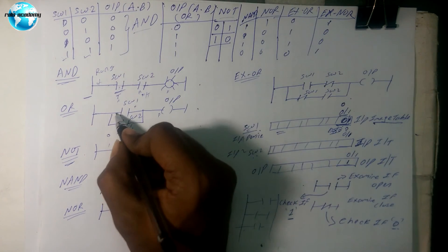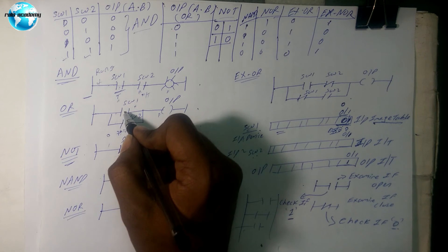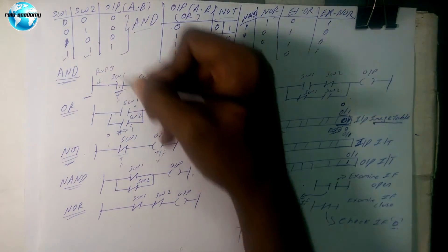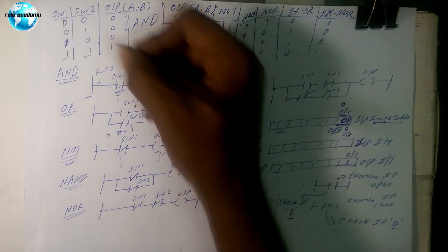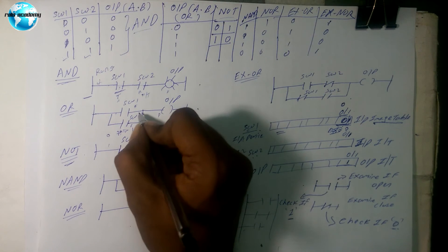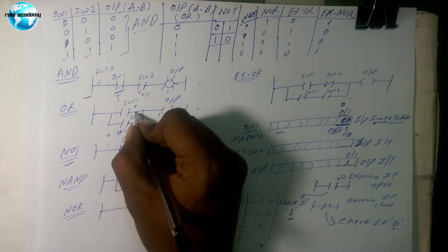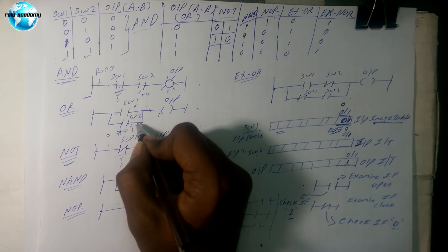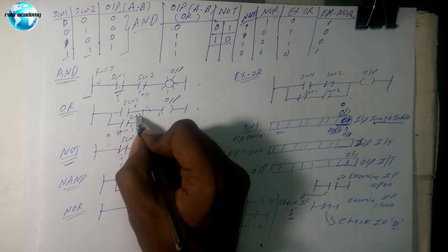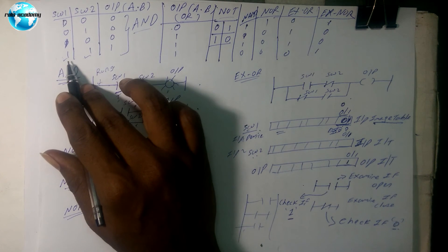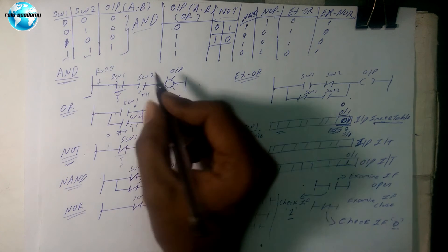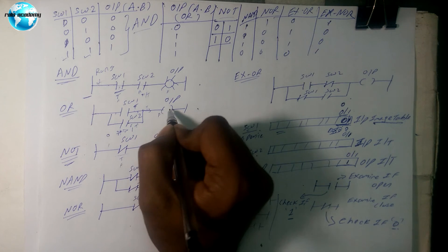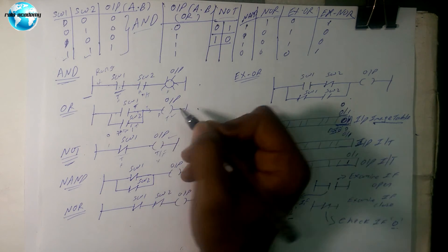This is called branching. What is the advantage of branching? If switch one is not pressed — false — but switch two is pressed — true — anyone being true gives a true condition. That is the advantage of a branch: it satisfies OR logic. If both are pressed, both are true, and it will still give true output.